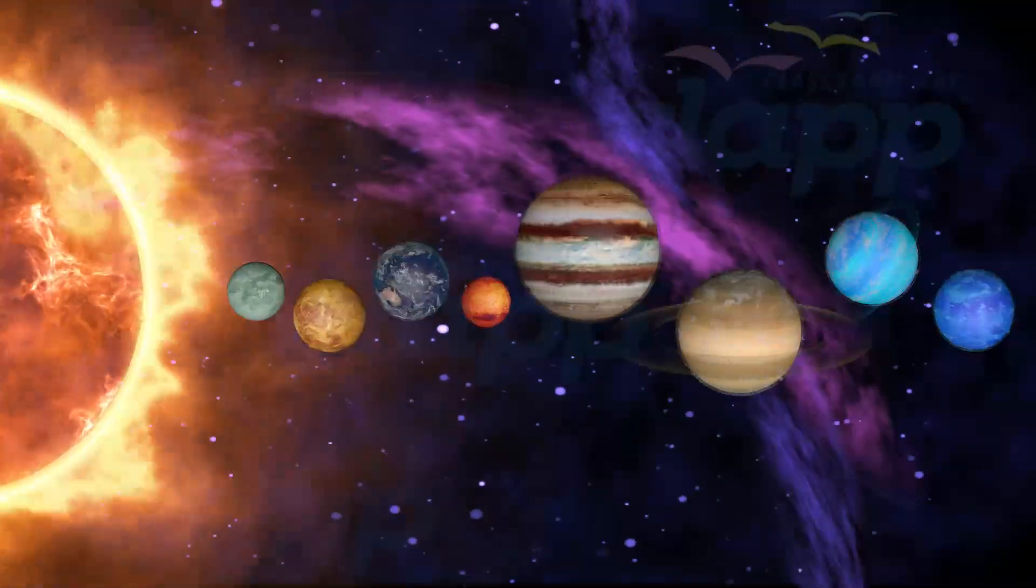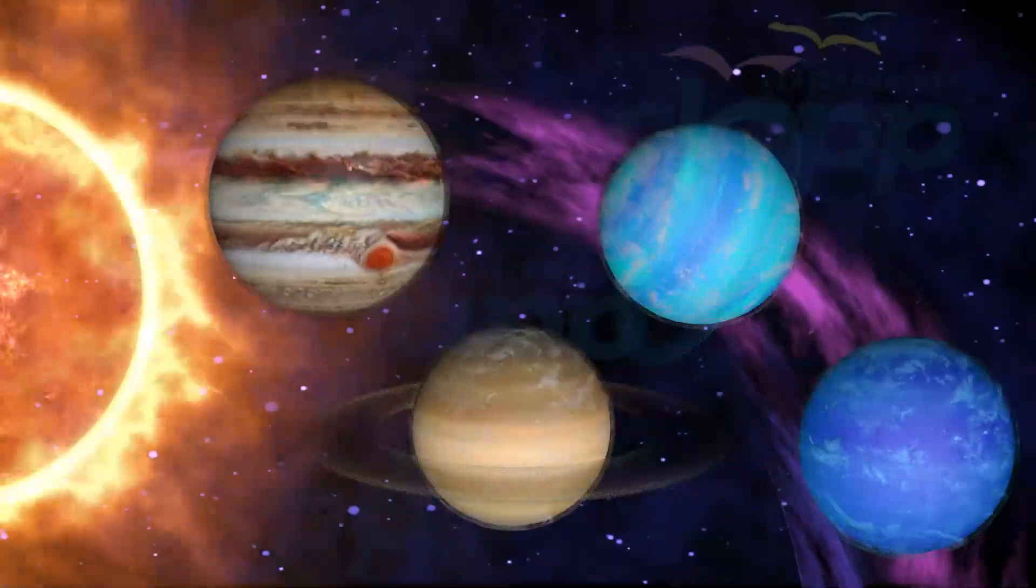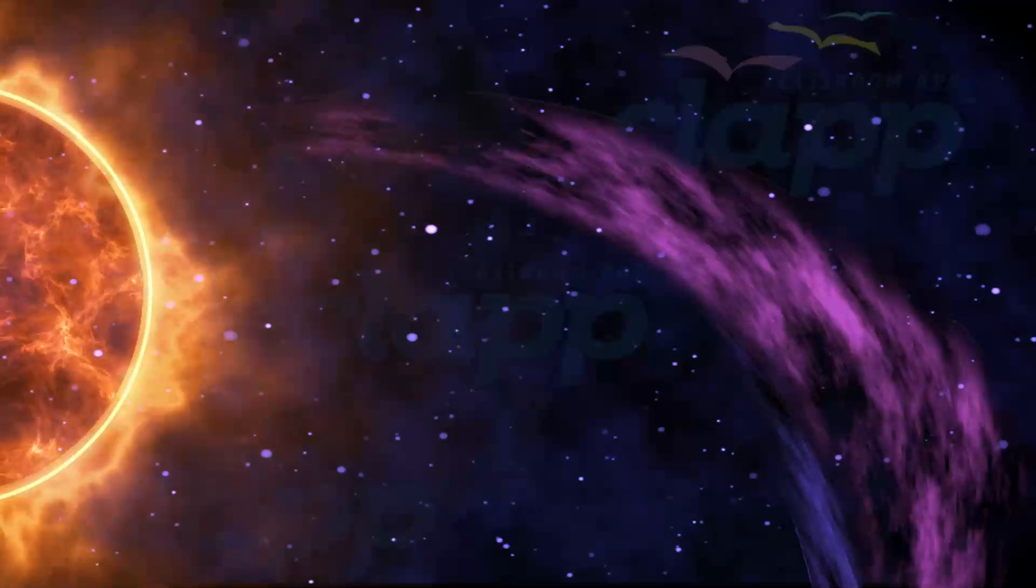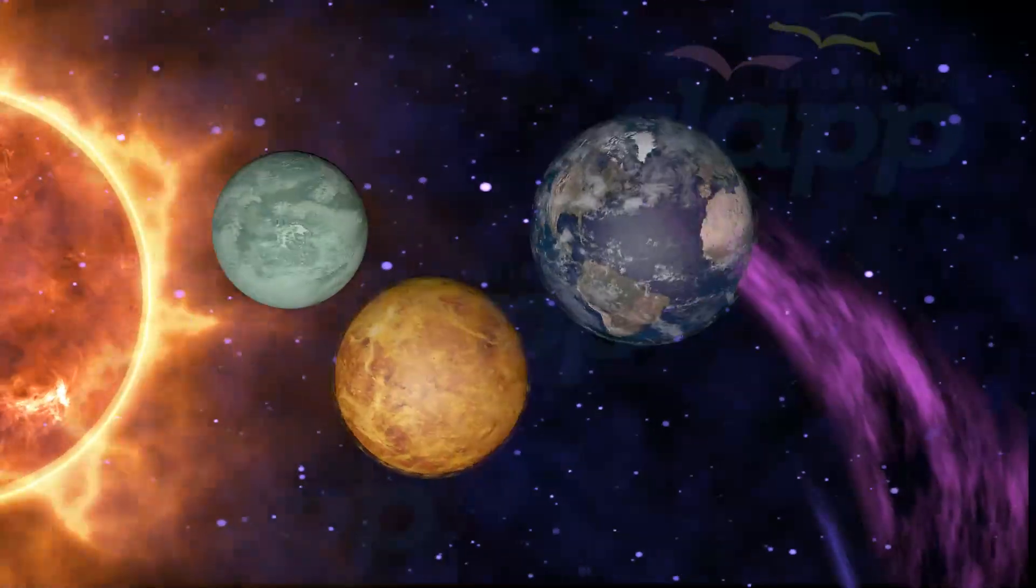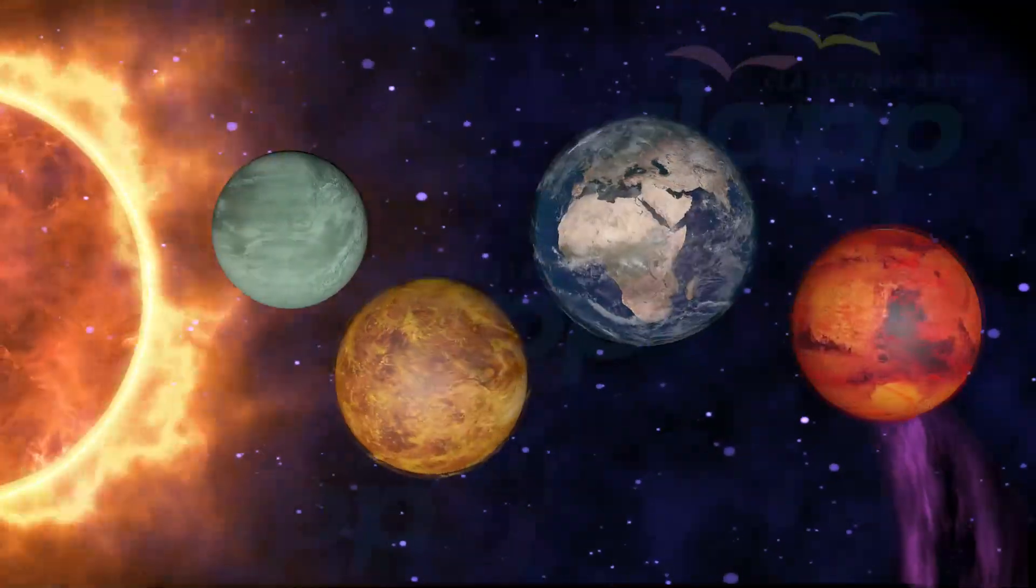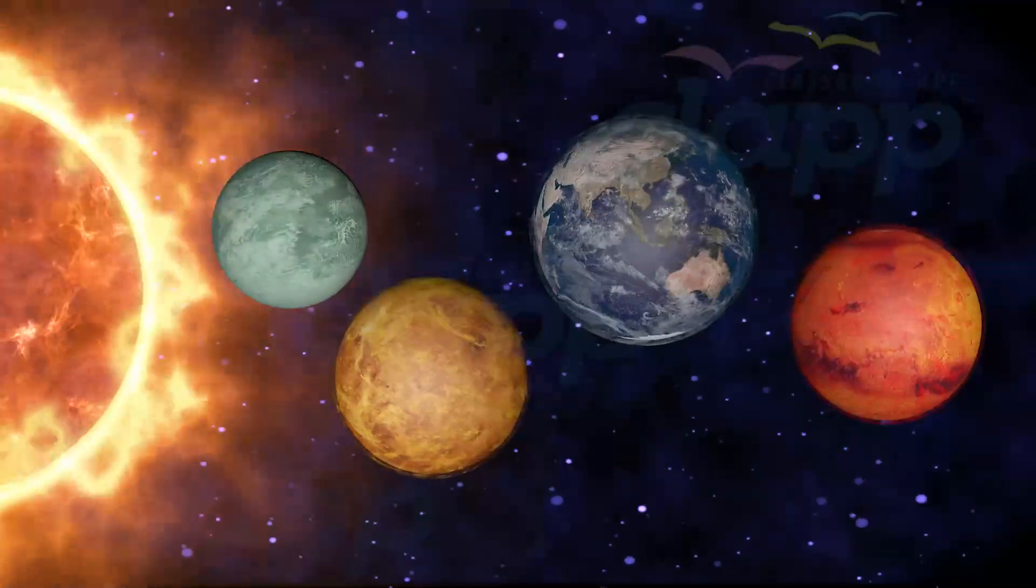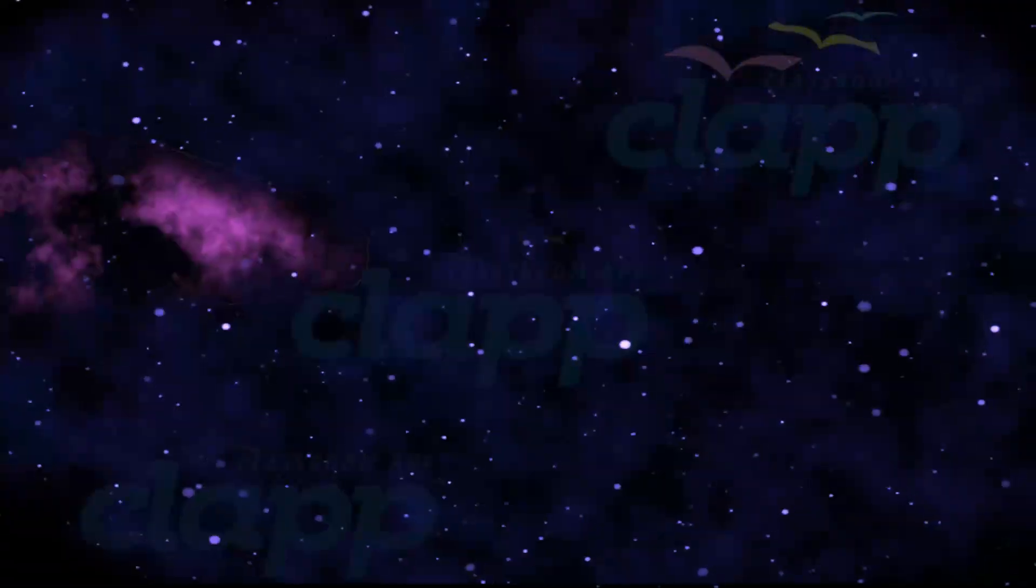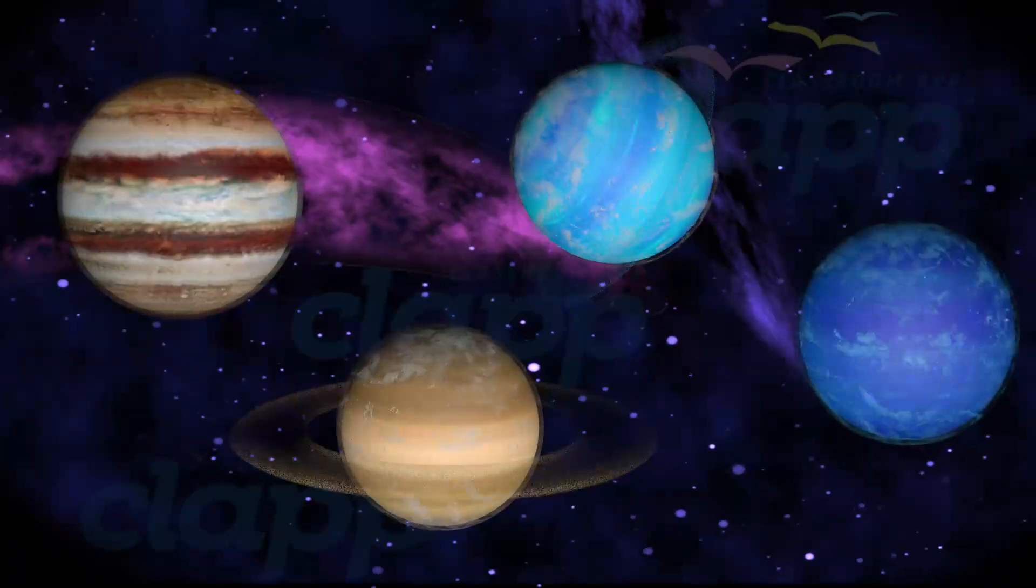Planets in our solar system are classified as terrestrial planets and jovian planets. The first four planets - Mercury, Venus, Earth, and Mars - are terrestrial planets. Terrestrial planets are composed of compact rocky surfaces.